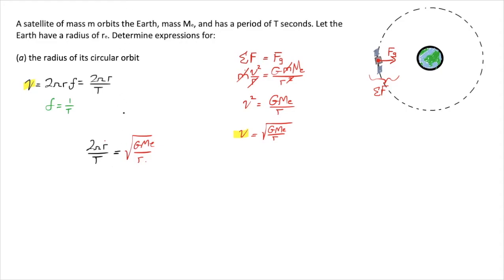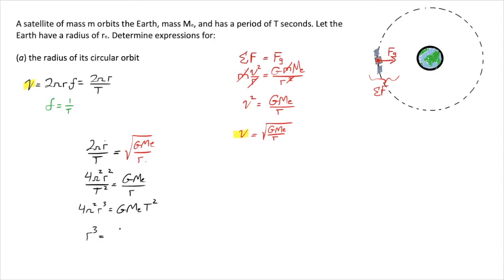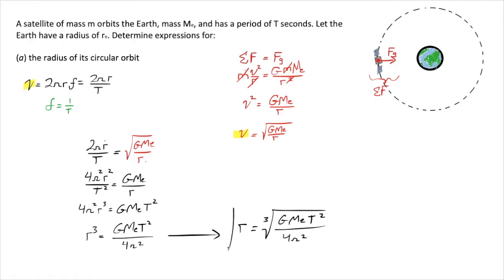Squaring both sides to eliminate the square root gives 4π²r² over t² equals GmE over r. Cross-multiplying gives 4π²r³ equals GmE t². Dividing both sides by 4π² gives r³ equals GmE t² over 4π². Taking the cube root of both sides, r equals the cube root of GmE t² over 4π². That's our expression for the orbital radius of a satellite orbiting Earth.